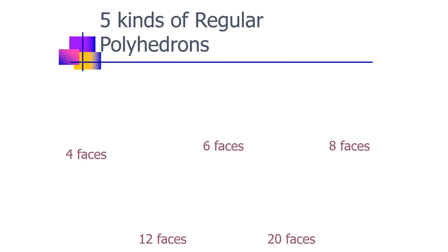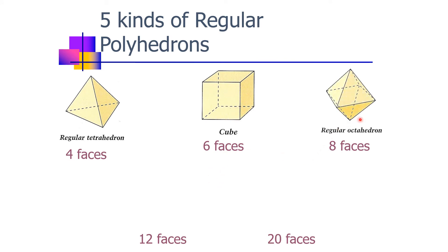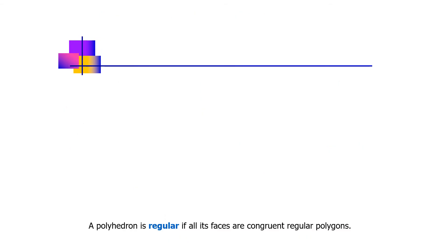Five kinds of regular polyhedrons: we have regular tetrahedron, which has four faces. Next, we have cube, which has six faces. Regular octahedron has eight faces. And then we have regular dodecahedron, which has 12 faces. And the regular icosahedron, which has 20 faces.